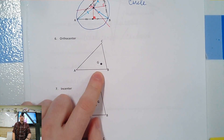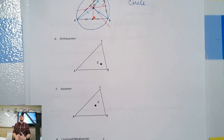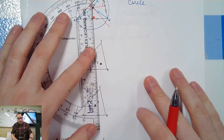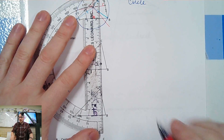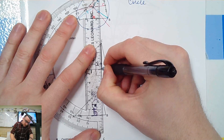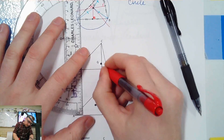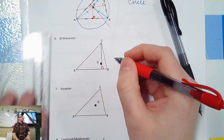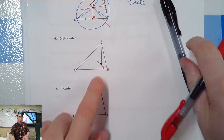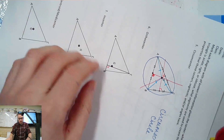Orthocenter — what lines make the orthocenter? Orthogonals, right? So all I have to do is go from the top — it's the height of the triangle. From the top to the bottom at 90. It's all the heights, the orthogonals. And it should go through G. My diagram wasn't very good. That's okay, I'll get better.